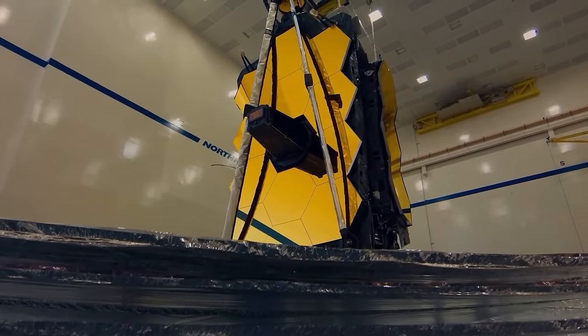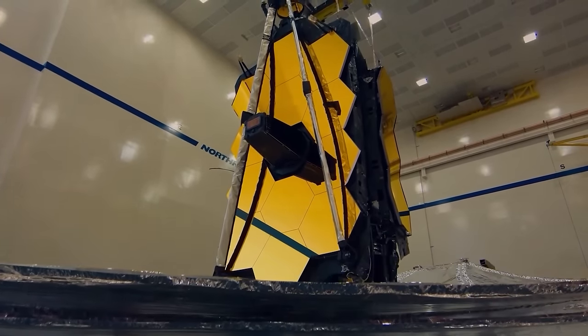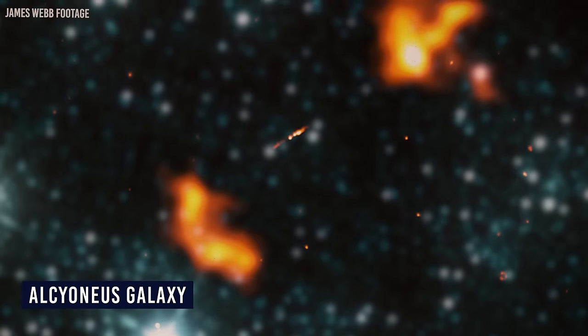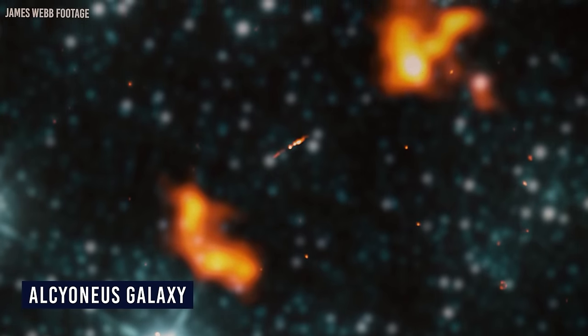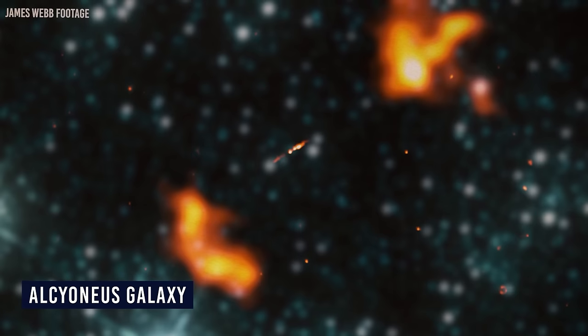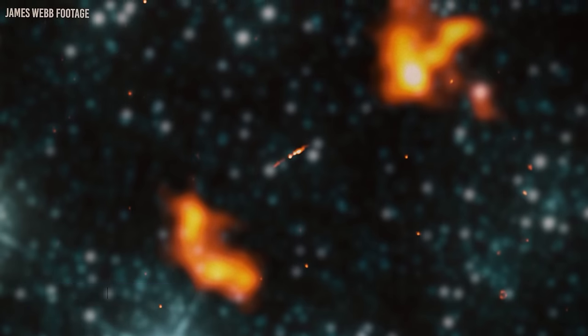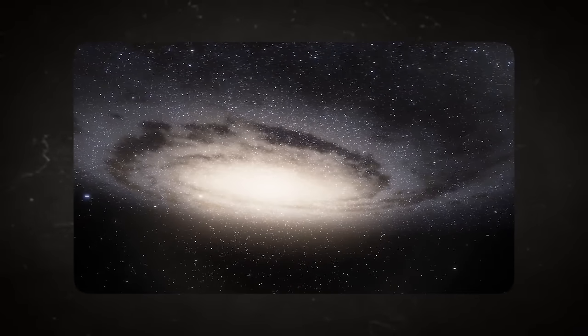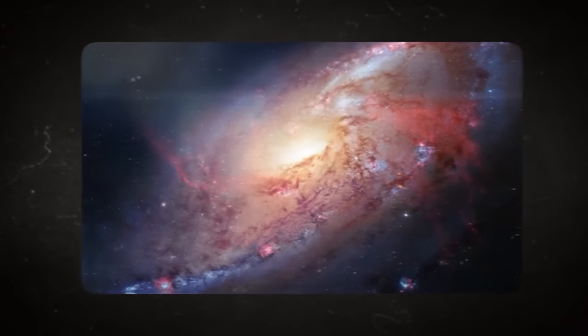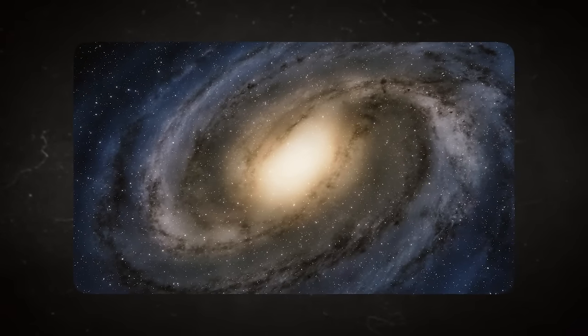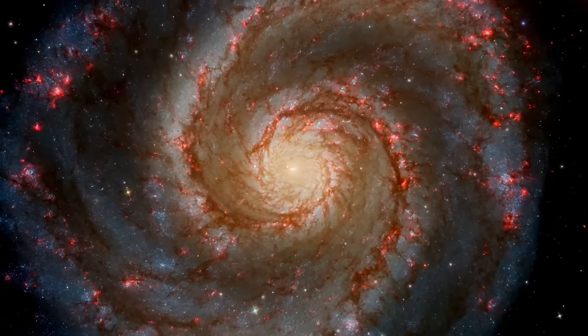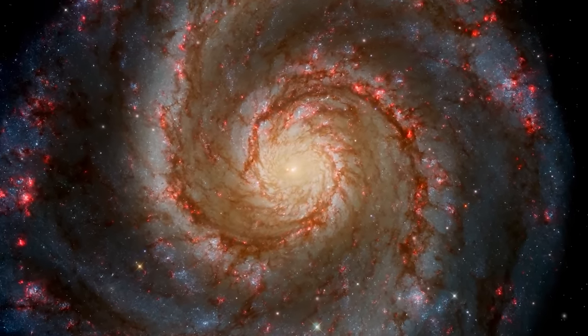The galaxy, named Alcyoneus after the son of Ouranos, the Greek primordial deity of the sky, was discovered about 3 billion light-years from Earth by a stroke of luck, according to Leiden University. Alcyoneus is a massive radio galaxy reaching 5 megaparsecs into space, about 16 million light-years long, comprising the largest known structure of galactic origin.